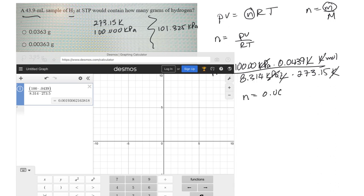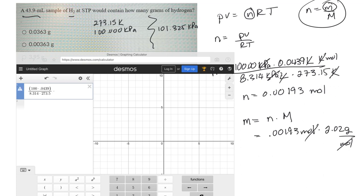0.00193 moles, and then I'll use this formula to define mass. So mass is moles times molar mass. The moles, 0.00193 moles, times the molar mass of hydrogen, is 2.02 grams per mole. So the moles cancel, so I just have to take that number that I had, and times it by 2.02.